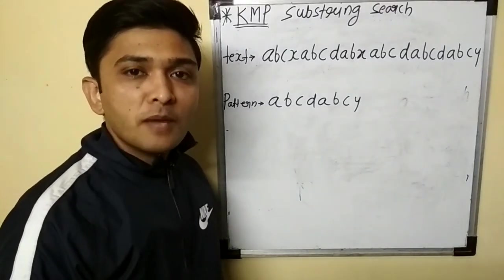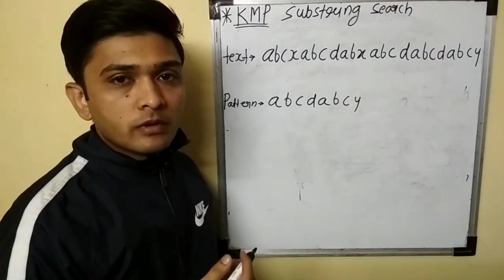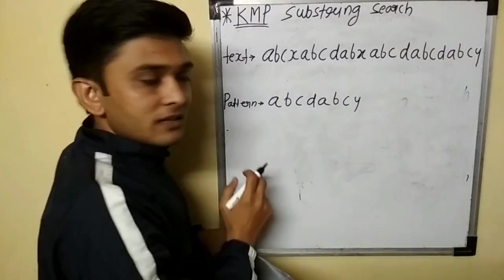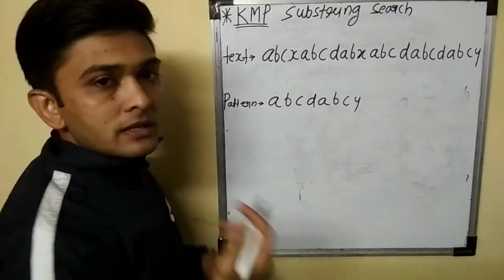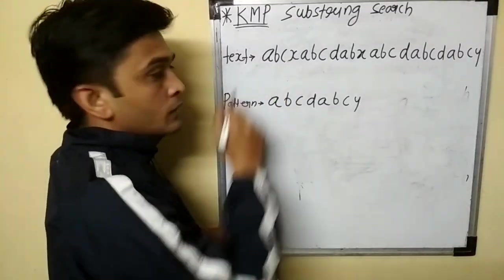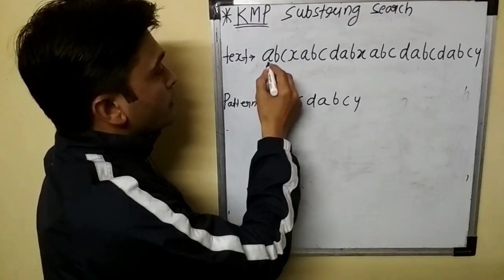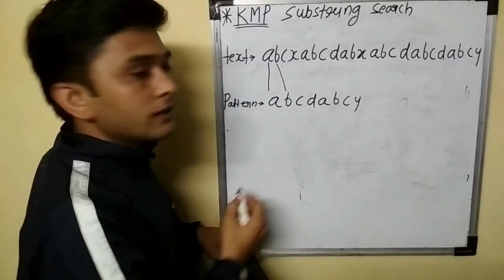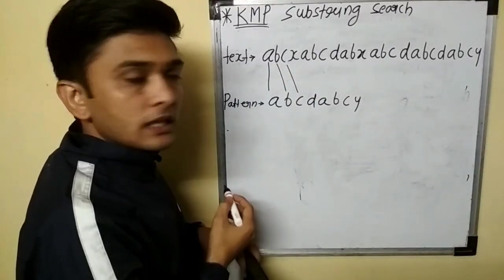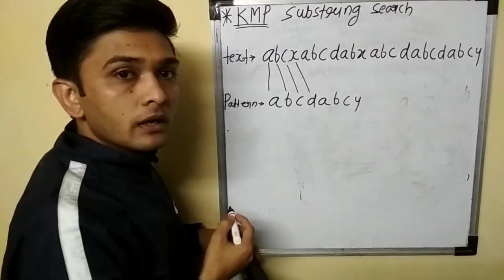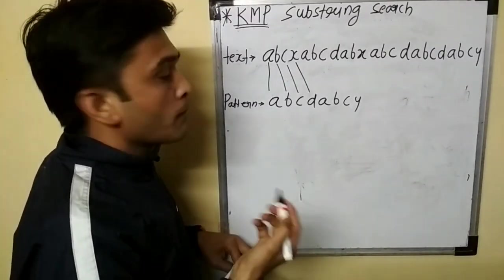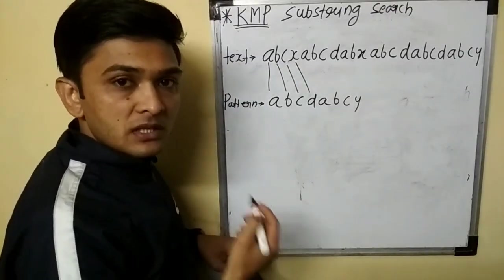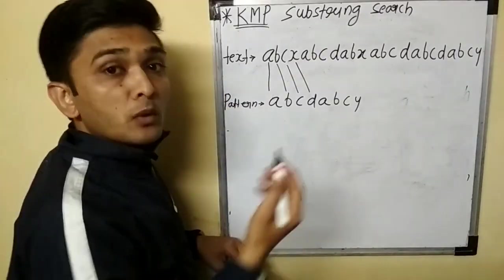Now we will see how KMP algorithm works. We want to find out this particular pattern in the given text. Here also we start from zero index. A is compared with A — match. B with B — match. C with C — match. Then X is compared with D — no match. Our aim in KMP substring search is we don't want to go backward in the text, and that is going to save time.